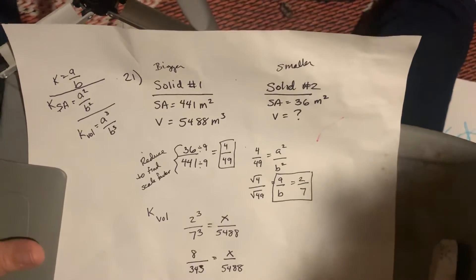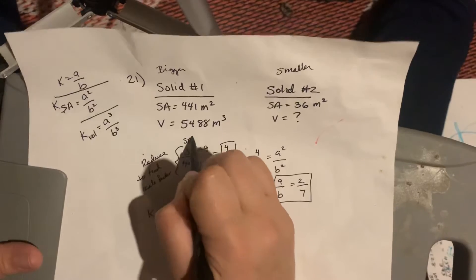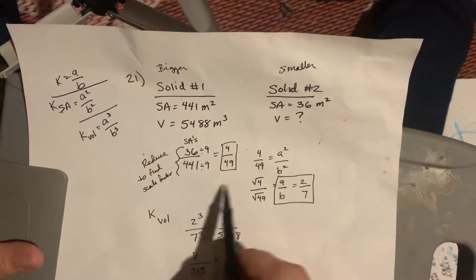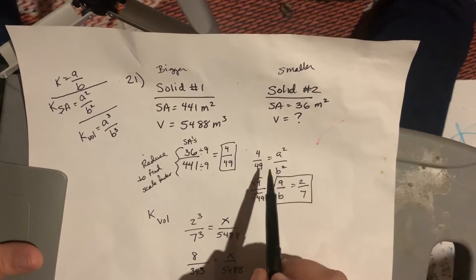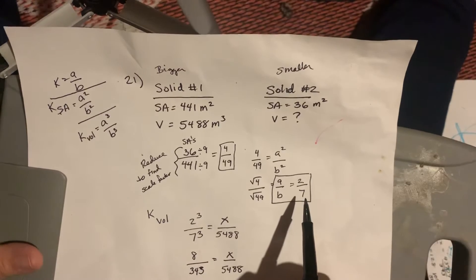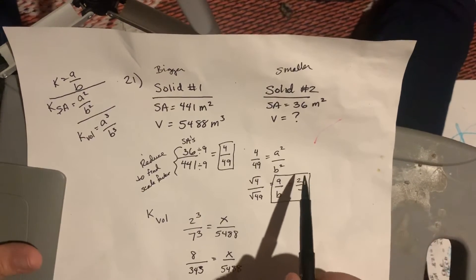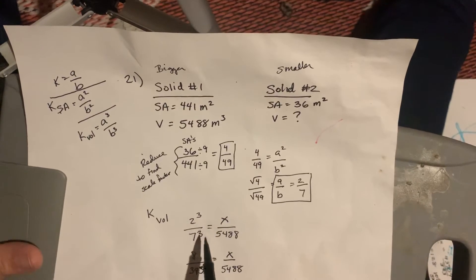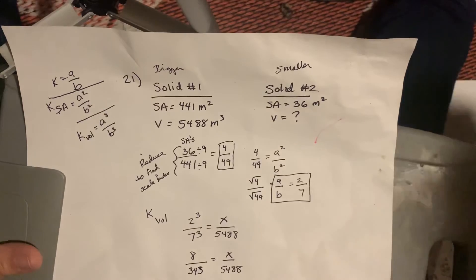Okay. So, the key here was first use the surface areas in a fraction. Reduce the fraction to know what my A squared over B squared is. Then square root them to figure my A over B. Then use my A over B to find my volume by cubing it. So, hopefully that helps. Let me know if you have any more questions. And good luck. Okay. Bye.